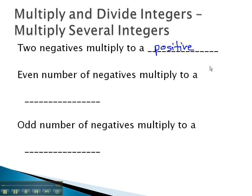This means we could pair off every set of two negatives, which would multiply to a positive. Extending that idea, if we have an even number of negatives, they'll each pair off and our final answer will be positive. Conversely, if we have an odd number of negatives, then we would have one negative left over, which would mean our final answer is negative.